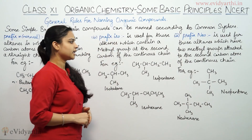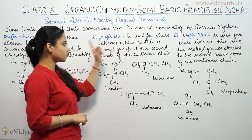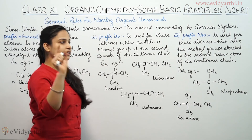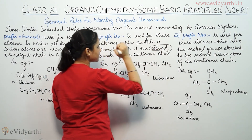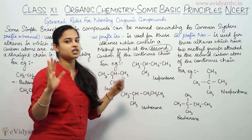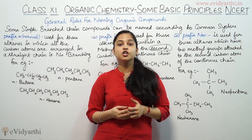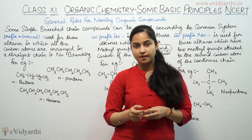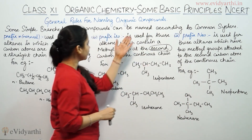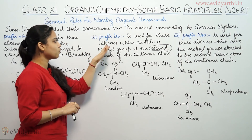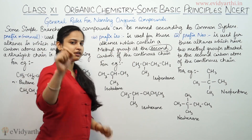Now we will be coming to prefix ISO. When do you use ISO? Prefix ISO is used for those alkanes which contain a methyl group at the second carbon of the continuous chain. Remember this: second carbon of the continuous chain. Prefix ISO is used when a methyl group is present at the second carbon of the continuous chain.